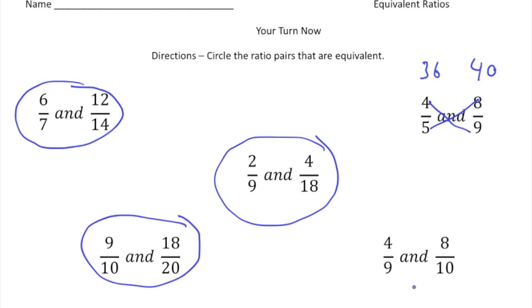And then finally, four ninths and eight tenths. Well, four times ten is forty and eight times nine is seventy-two. And because those are not equal, these are not equal fractions. How did you do?